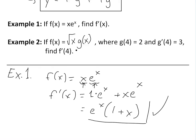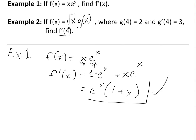Now looking at example two: if f of x equals the square root of x times g of x, where g of four is equal to two and g prime of four is equal to three, find f prime of four. This example shows that you don't actually need to know the function — all you need to know are the values at whatever x value you're evaluating at.